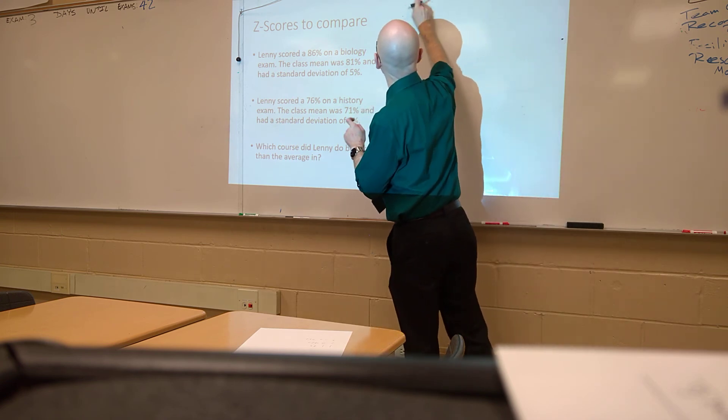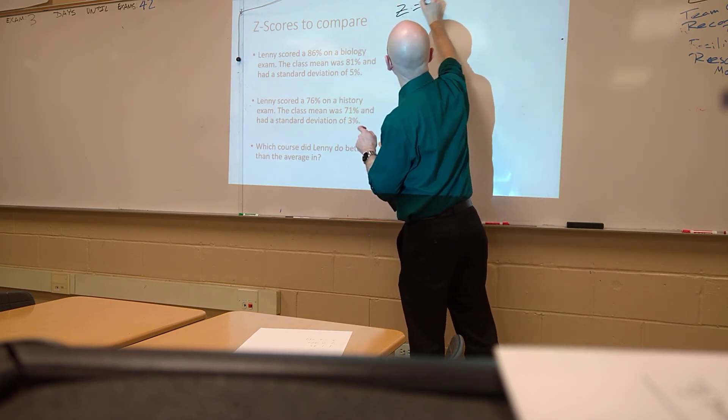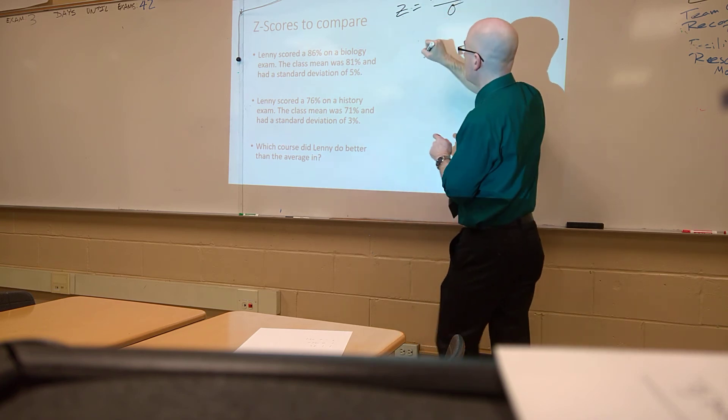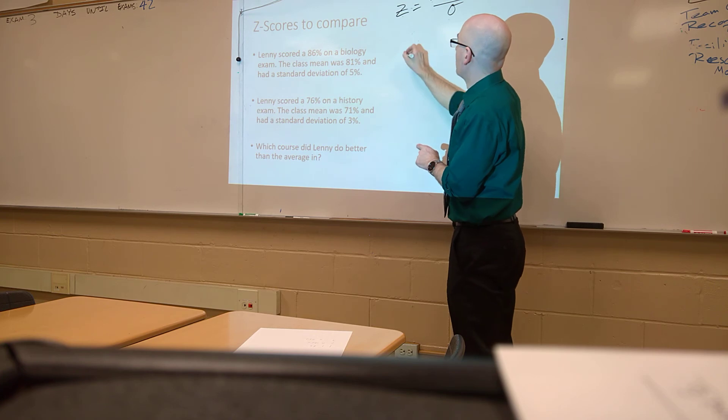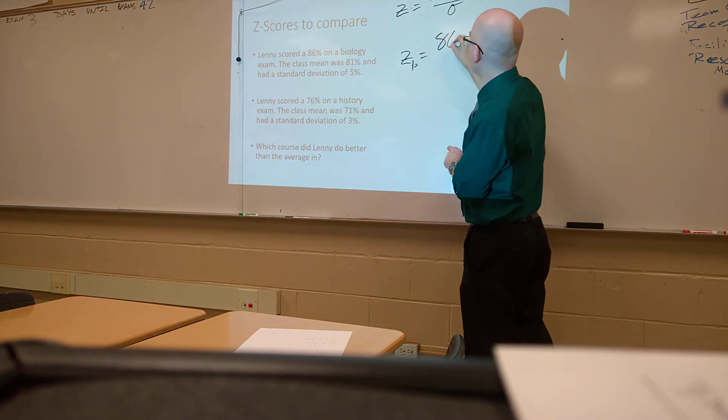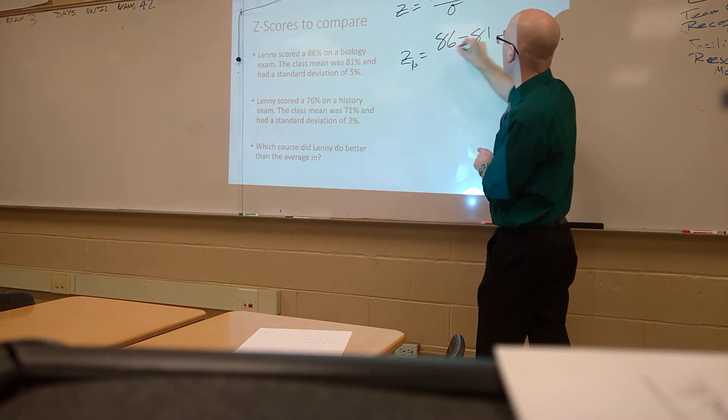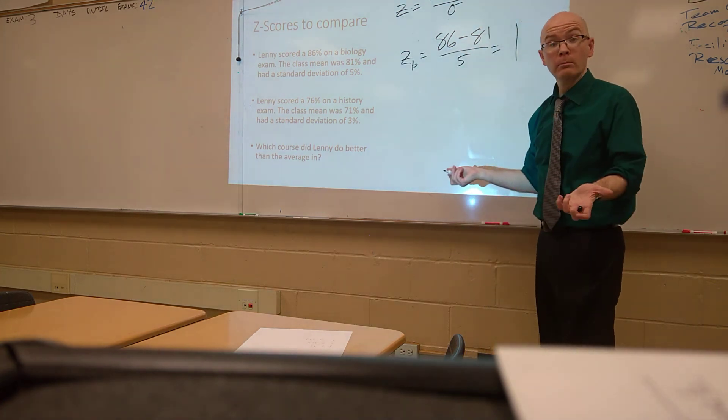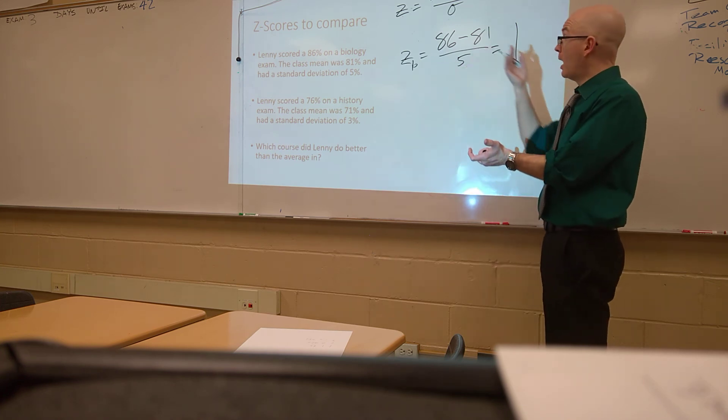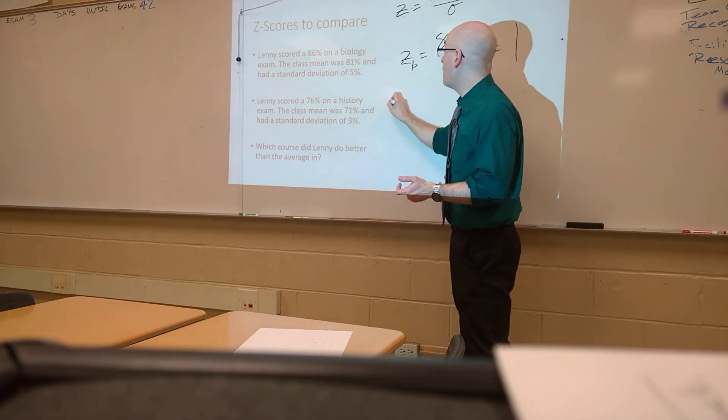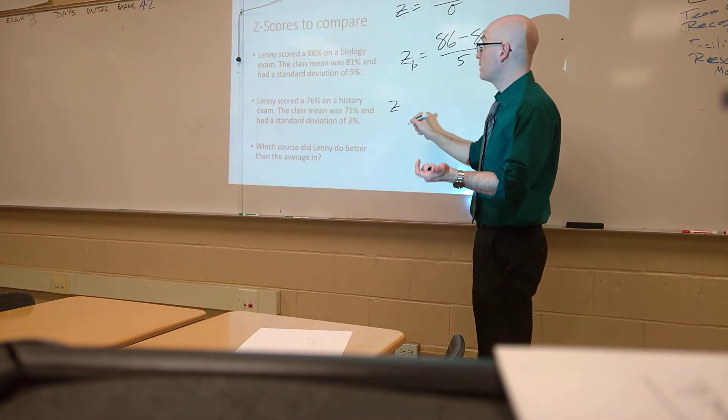But we're going to see that's not quite the case. Because if we use our z-score formula, z is equal to your value x minus the mean over the standard deviation. Plug in here. In this case, our z for bio, I'll call it z sub b, is equal to 86, that's our value, minus the mean of 81, over 5, which gives us 5 over 5, which is equal to 1. He's 1 standard deviation, and it's positive, so he's to the right. He's basically 1 standard deviation better than the class mean, class average.